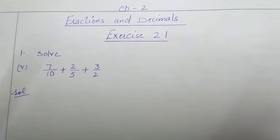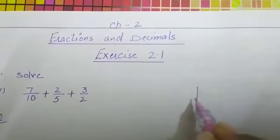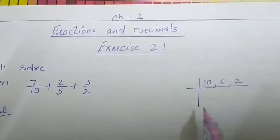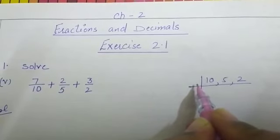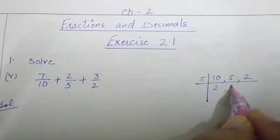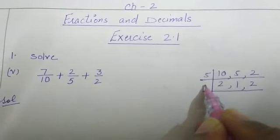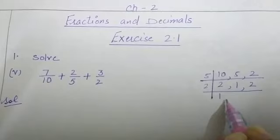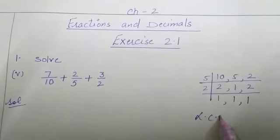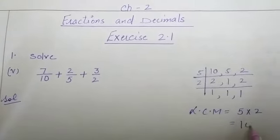First of all, we will take the LCM of denominators. LCM of 10, 5, and 2 will be... first we will divide by 5: 5 2's are 10, 5 1's are 5, 2 as it is. Now we will divide by 2: 2 1's are 2, 1, 2 1's are 2. So LCM will be equal to 5 multiplied by 2, that is equal to 10.